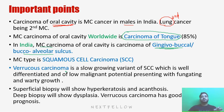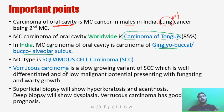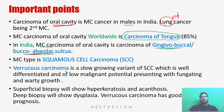Why is the most common site gingivobuccal sulcus? You have seen patients with tobacco chewing habits — they will keep the tobacco in between the sulcus, that is between the gums and the buccal mucosa, and slowly they are chewing that. So because of the chronic irritation at that particular part, in India, the gingivobuccal sulcus carcinoma is the most common variety. Whereas in the rest of the world, carcinoma of the tongue is the most common site.